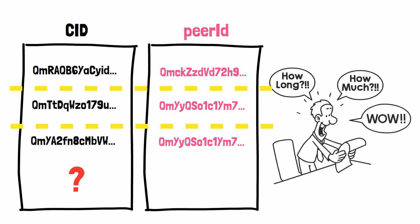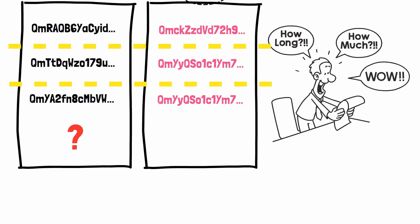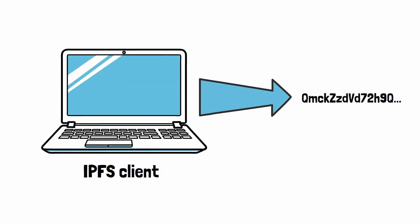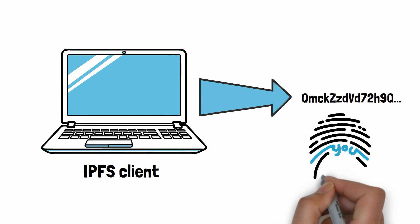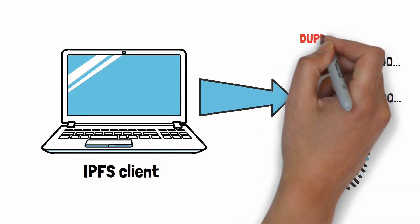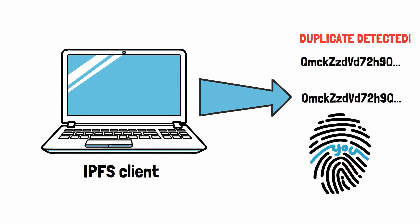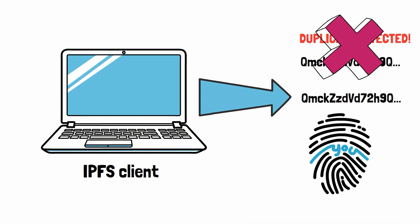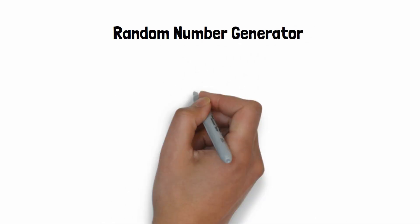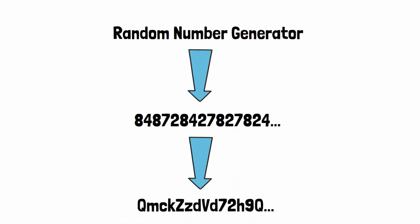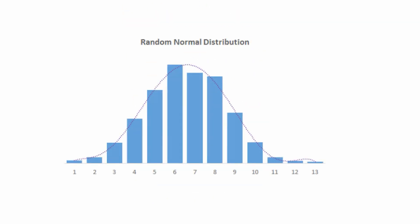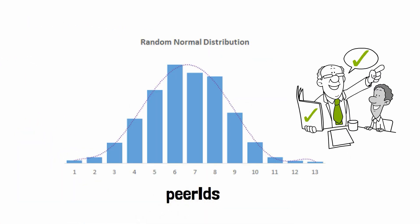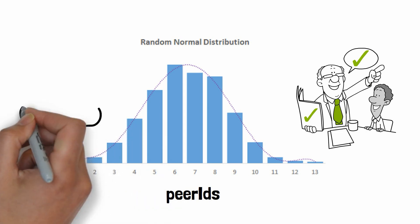To understand how we split the DHT, we need to understand peer IDs. When an IPFS client starts for the first time, it generates a peer ID — a string of characters that uniquely identifies each computer running IPFS. In theory, two clients could generate the same peer ID, but the chance is so small it will never happen in our lifetime. Peer IDs are generated using a random number generator with an even distribution, which means we can expect peer IDs to also have an even distribution.